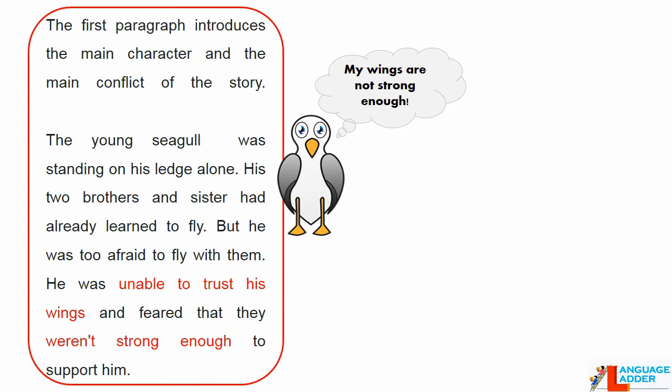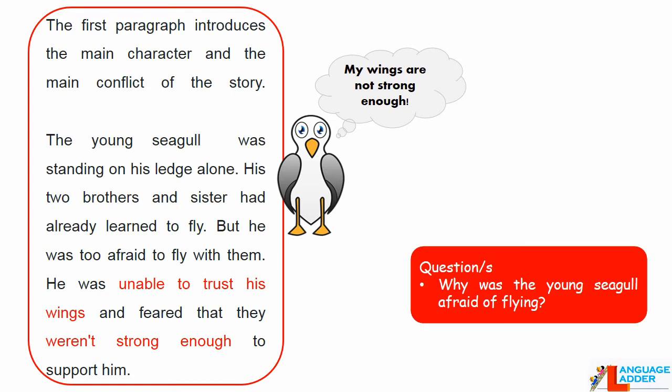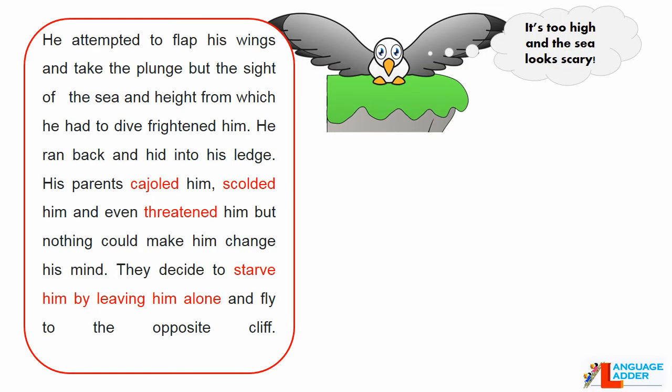The first paragraph introduces the main character and the main conflict of the story. The young seagull was standing on his ledge alone — his two brothers and a sister had already learned to fly, but he was too afraid to fly with them. He was unable to trust his wings and feared they weren't strong enough to support him. He attempted to flap his wings and take the plunge, but the sight of the sea and the height frightened him. He ran back and hid in his ledge. His parents cajoled him, scolded him, and even threatened him, but nothing could make him change his mind. So they decided to starve him by leaving him alone and flying to the opposite cliff.